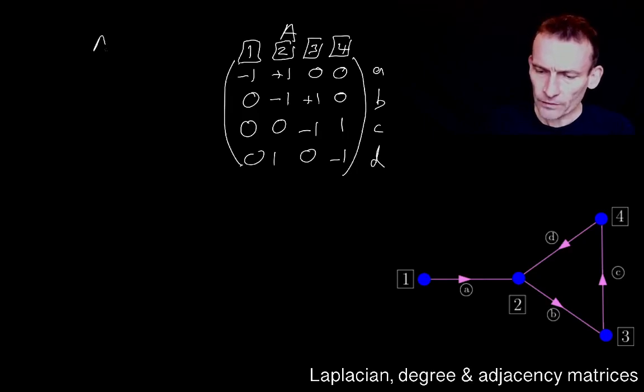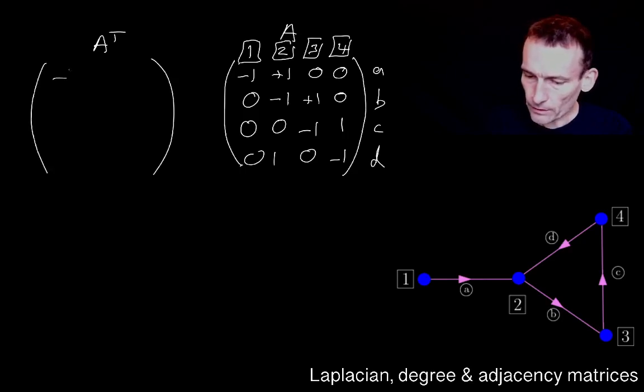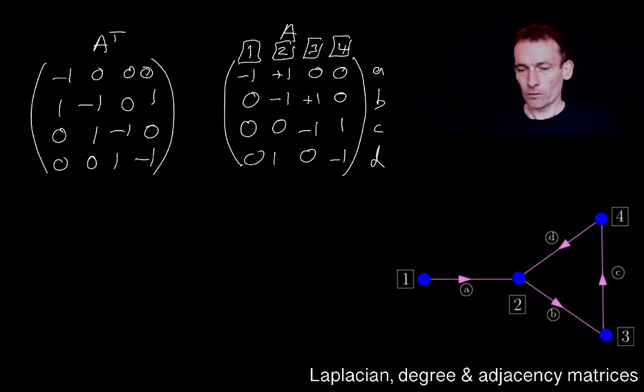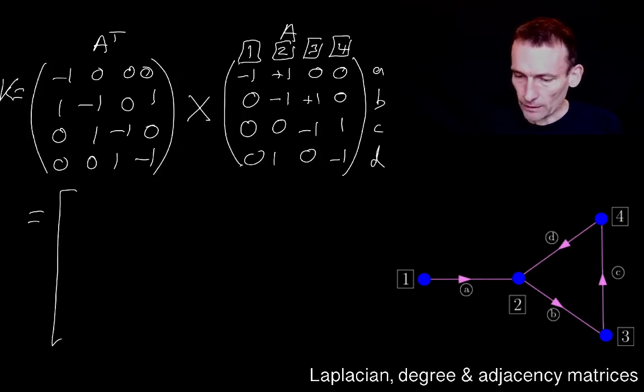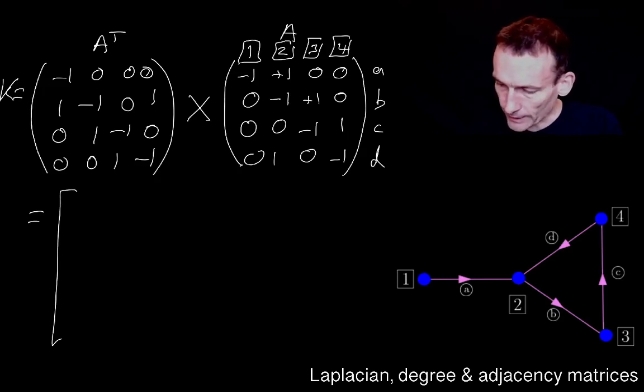And over here look, let's just write down the transpose. Once you've got A you just transpose it. So I just get this, just the transpose of that. And what I want to do is to work out K, the Laplacian, what I've called this Laplacian matrix.